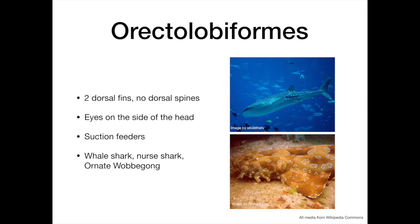The orectolobiformes, or carpet sharks, possess two spineless dorsal fins and have eyes positioned on the side of the head. They tend to be suction feeders, however they have a range of different life histories, from pelagic whale sharks to benthic wobbegong sharks.